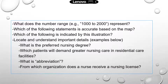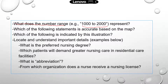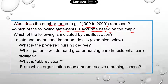Some examples of questions are: what does the number range represent? For example, if there's a graph or text that has a number range — like 1000 to 2000, or 1997 to 2001 — you need to know what those number ranges represent based on the information available from the graphic. Another question type is: which of the following statements is accurate based on the map? This tests whether you can read a map correctly. This is one of the practice questions in the official T's study menu.